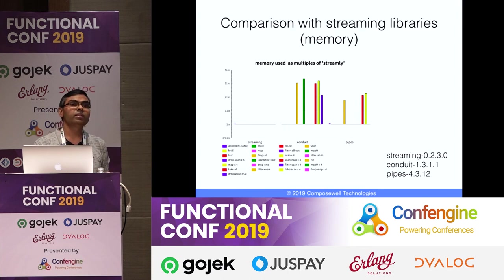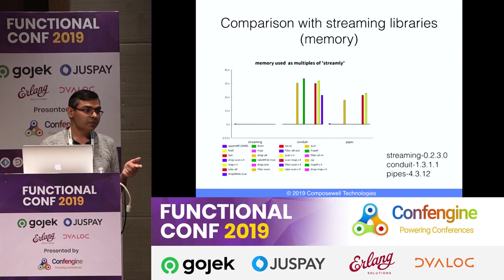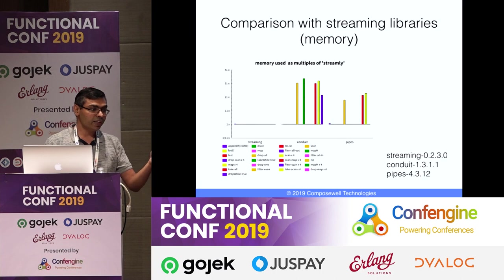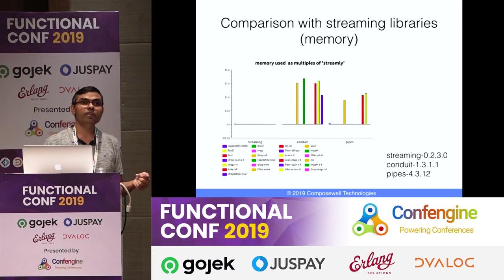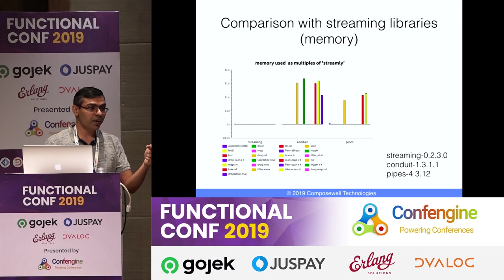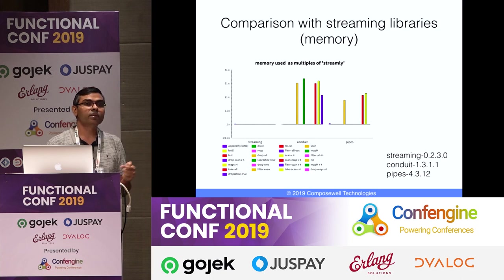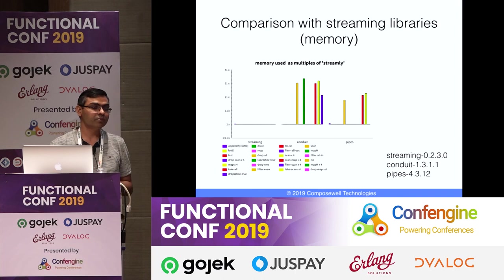For memory comparison: streaming has the same memory consumption as Streamly, while pipes and conduit in some cases take a lot more memory.